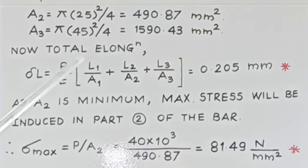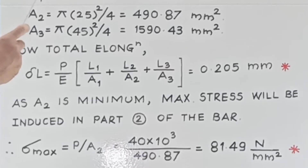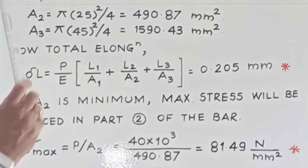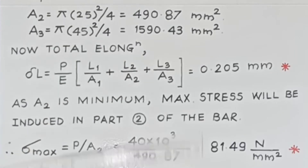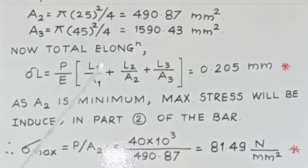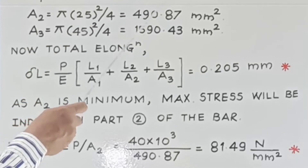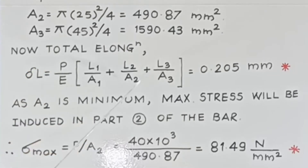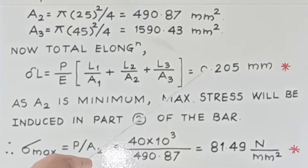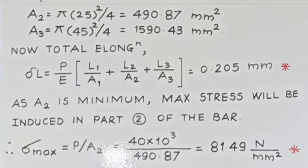Now we want to find out the total elongation. Total elongation delta L = delta L1 + delta L2 + delta L3. Here P and E are constant, so taking them common: delta L = (P/E) × (L1/A1 + L2/A2 + L3/A3). Substituting L1 = 200, A1 = 1256.64, L2 = 250, A2 = 490.87, L3 = 160, and A3 = 1590.43, you get delta L = 0.205 mm. As it is subjected to pull, this change in length is an increase, that is elongation.